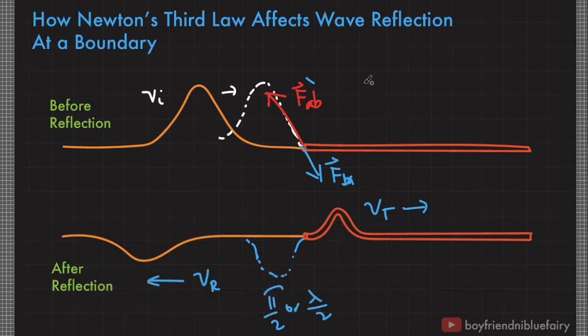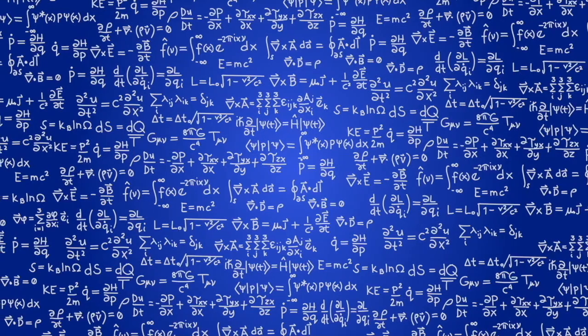This is vital when we study thin film interference. To predict whether we will have constructive or destructive interference from a thin film boundary, we must also consider whether the second medium has a higher or lower refractive index.